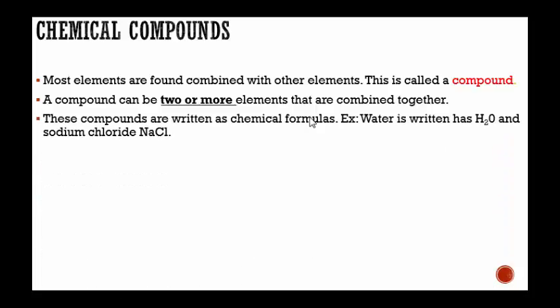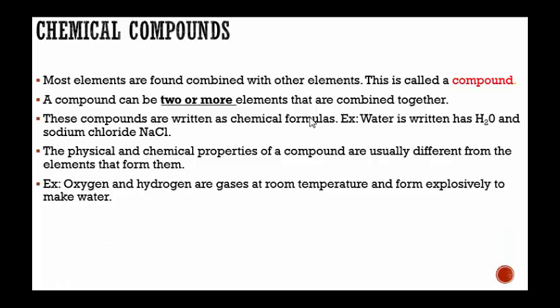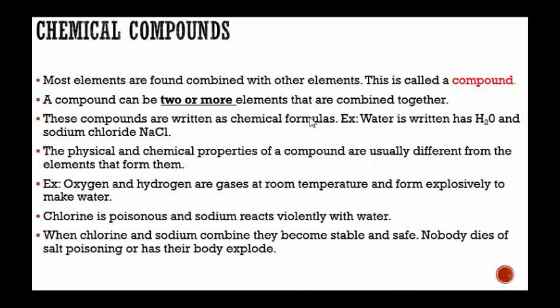These compounds are written as chemical formulas. For example, water is written as H2O. Sodium chloride is written as NaCl. The physical and chemical properties of a compound are usually different from the elements that form them. For example, oxygen and hydrogen are gases at room temperature and they form explosively to make water. Chlorine is poisonous and sodium reacts violently with water, but when chlorine and sodium combine, they become stable and safe. Nobody dies of salt poisoning or has their body explode when they breathe in oxygen.